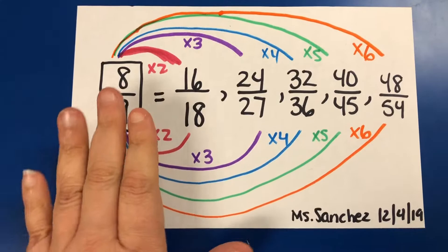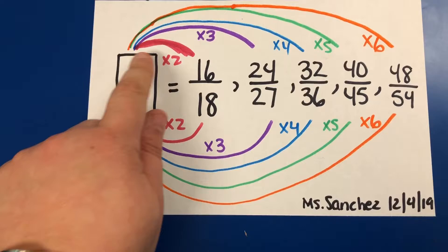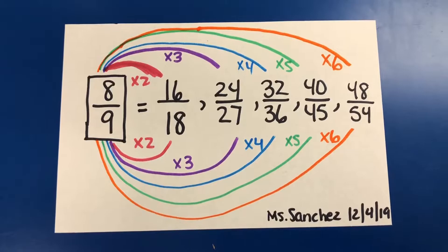So here it is. Basically, this is my example. I gave students a similar sheet, just with the first fraction, and they had to generate equivalent fractions by multiplying the original fraction by first two, then three, four, five, and then six. So we were doing some rainbow equivalent fractions here.